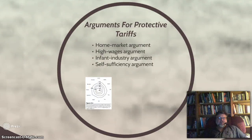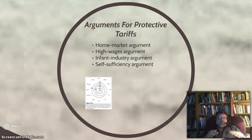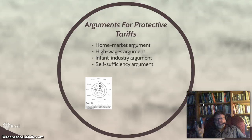Arguments in favor of protective tariffs include the home market argument — protecting home producers — the high wages argument, that higher wages can be sustained due to import tariffs, and the infant industry argument, that placing high import duties on imported goods helps a country begin its own domestic manufacturing. There is also the self-sufficiency argument, which holds that a country should produce its own consumer items and not import them from abroad. According to that argument, no one in the United States would be able to drive a Toyota.